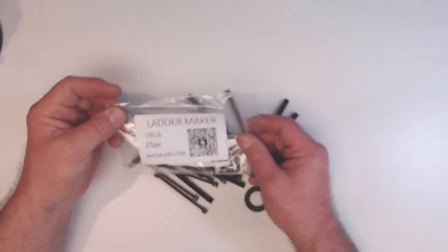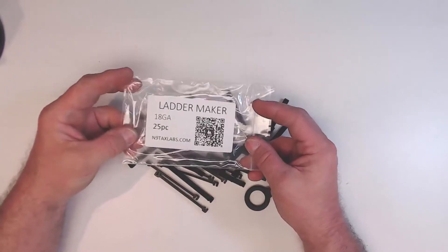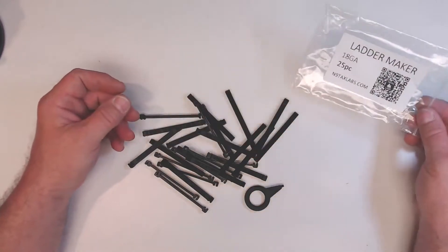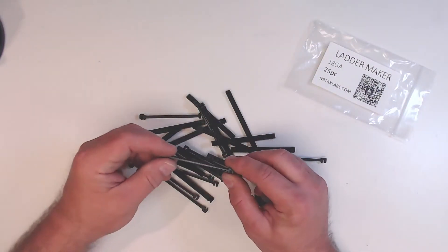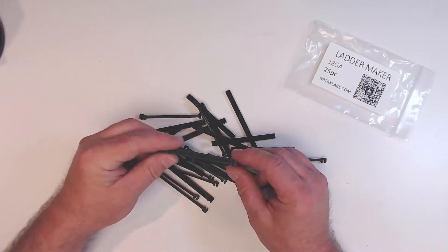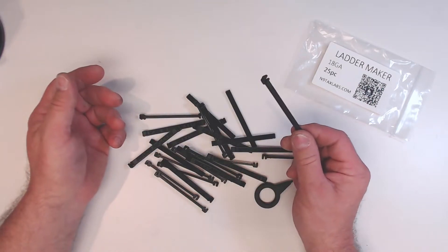Let's dump these out. A bag of these, the 18 gauge ones anyway, is going to get you 25 pieces, and that's going to allow you to make between 25 and 50, even 60 feet of ladder line, depending on how far you want to space these on the wire.